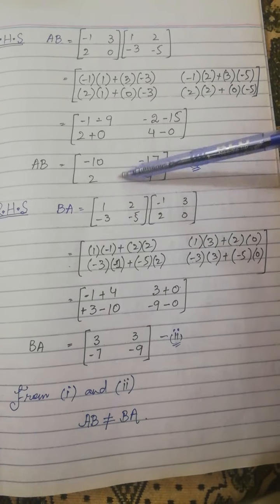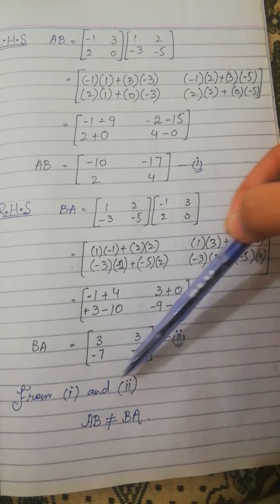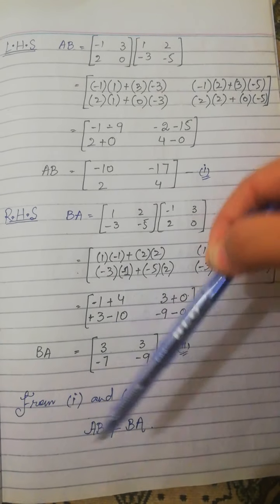Now if you see, AB and BA are not equal. We will say that this was equation 1 and 2, so from 1 and 2, AB is not equal to BA.